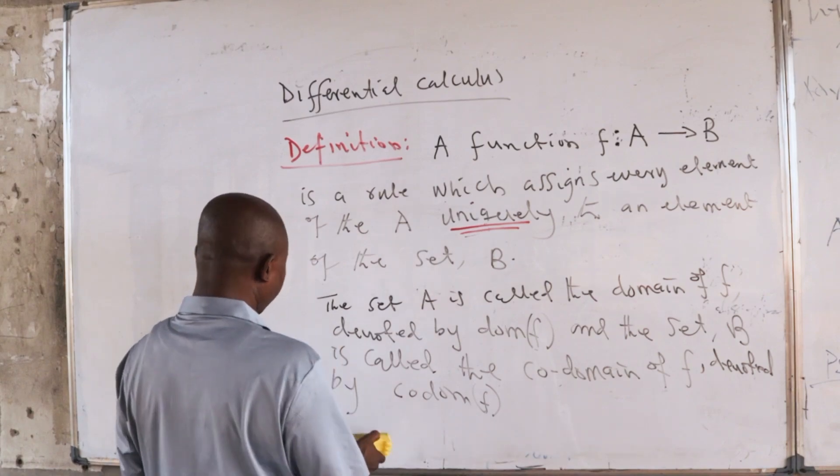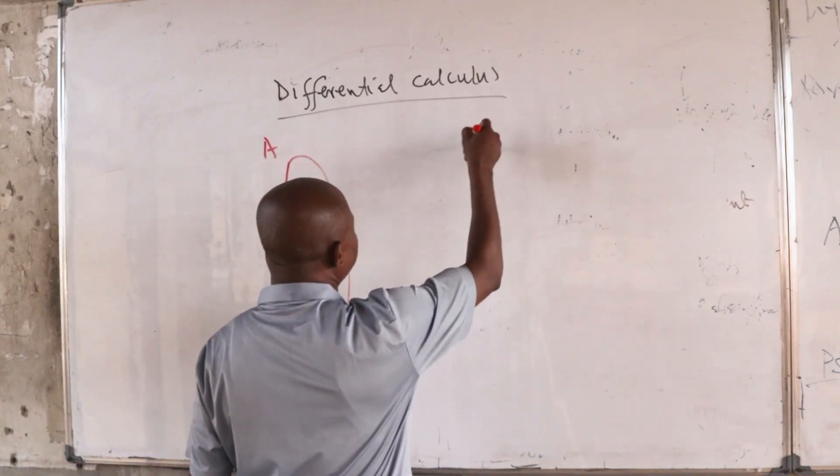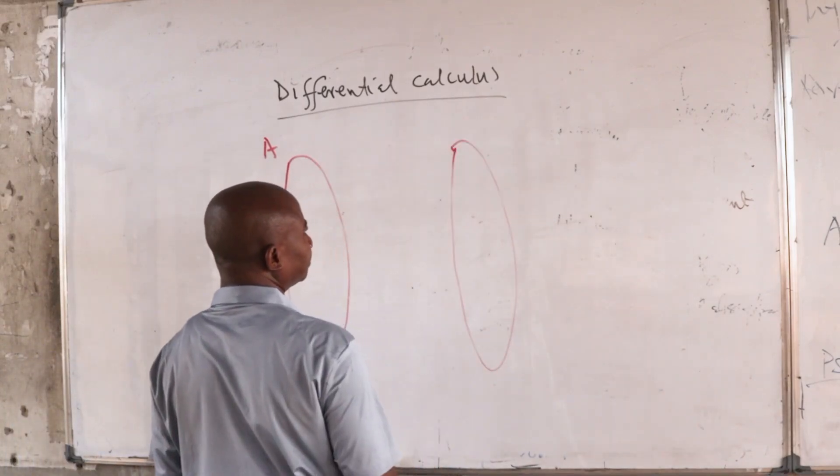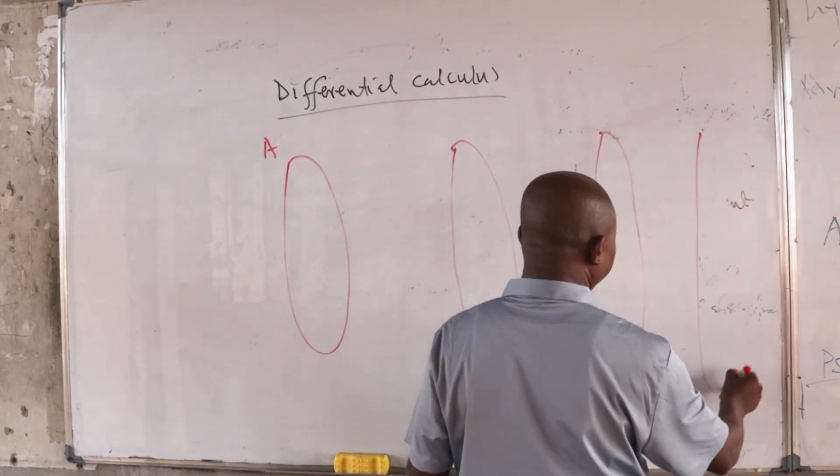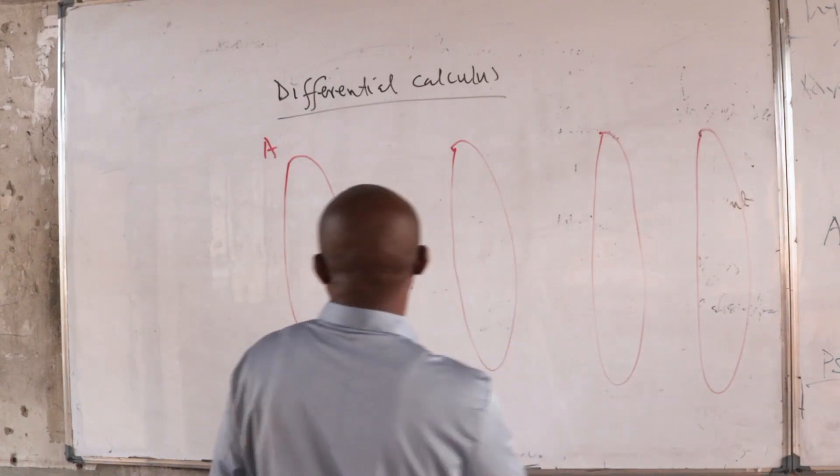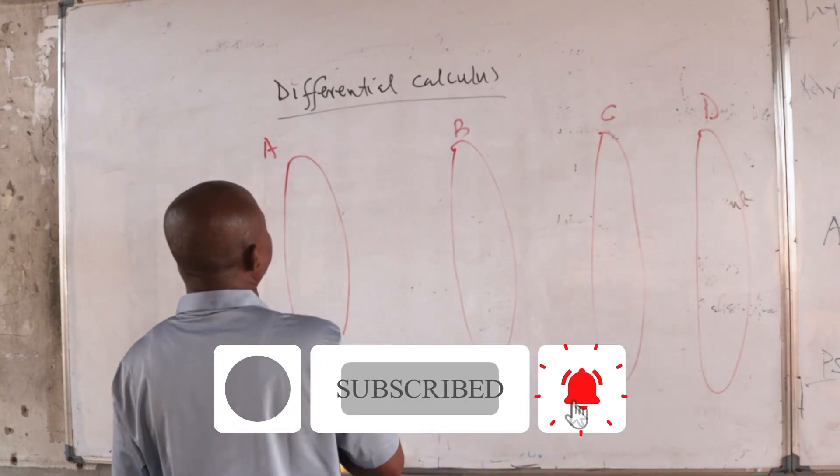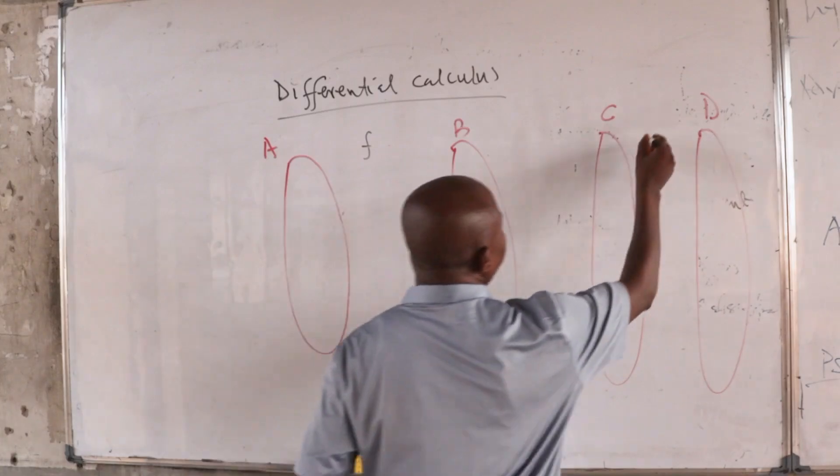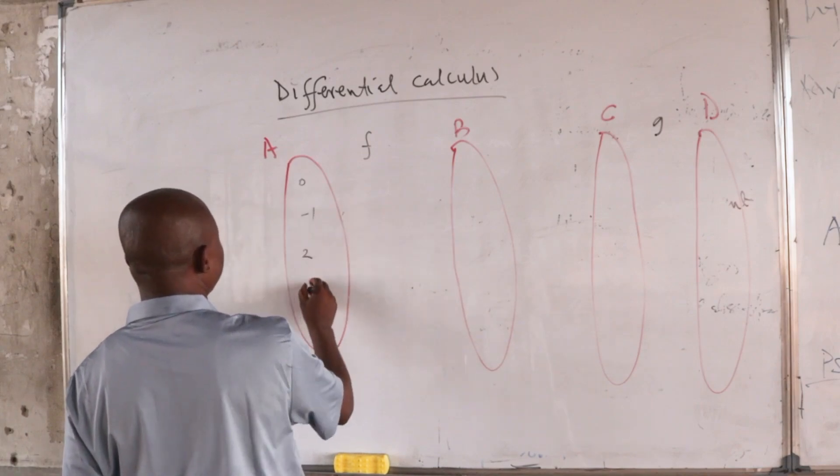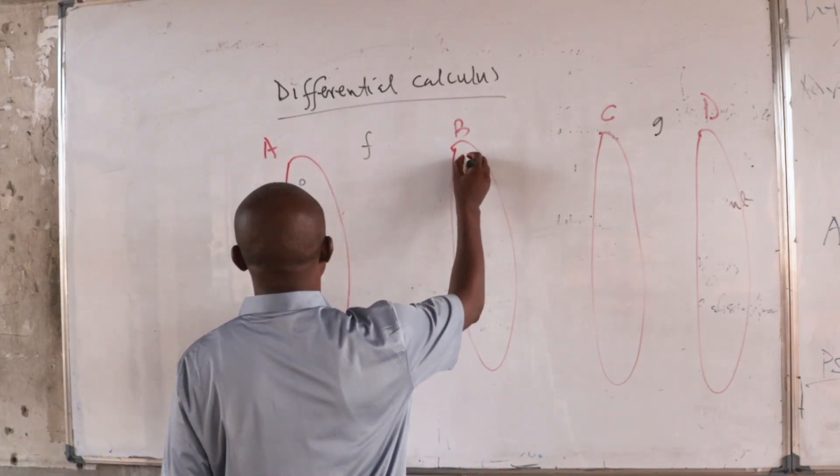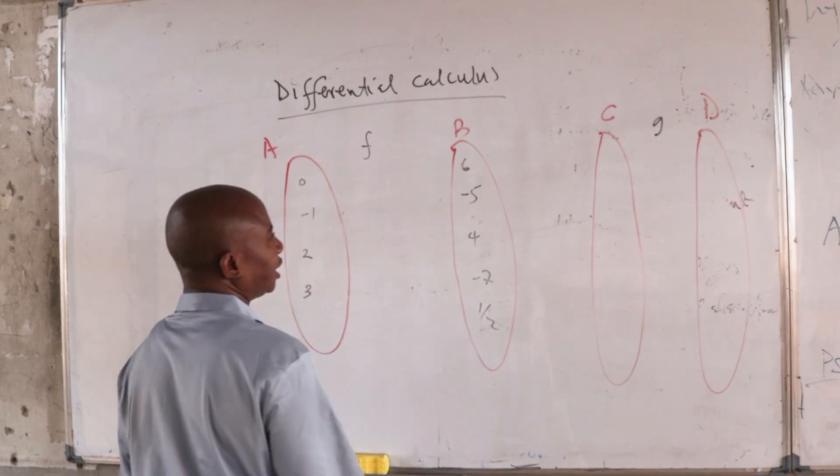Alright, to bring up the beauty of this definition, please take a look at this following diagram. Consider this set capital A, and then another set capital B. I consider another one here C, another one here D. Here I have F, here I have G. This set contains the following elements: 0, -1, 2, 3. This one contains the following elements: 6, -5, 4, -7, half, as the case may be.